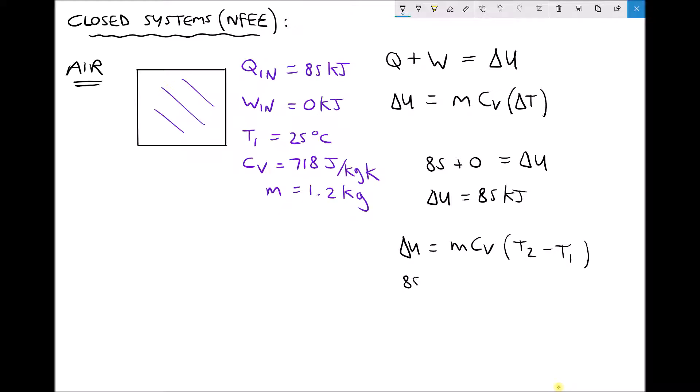So we have delta U, 85 kilojoules - we need to remember to work in SI units - equals the mass times the specific heat capacity of 718. T2 is the thing we're trying to find, minus T1 is 25.